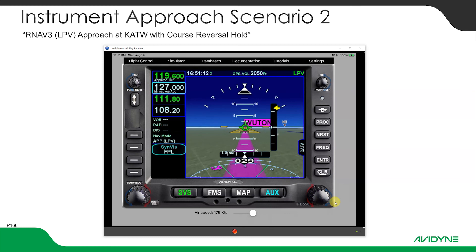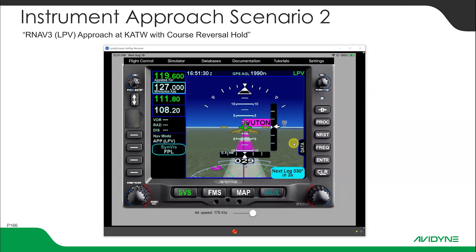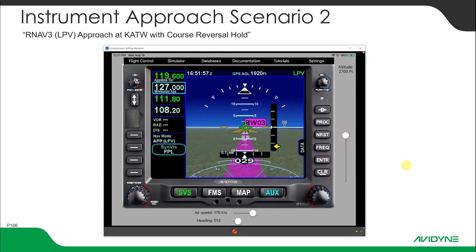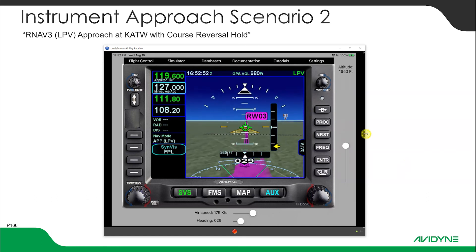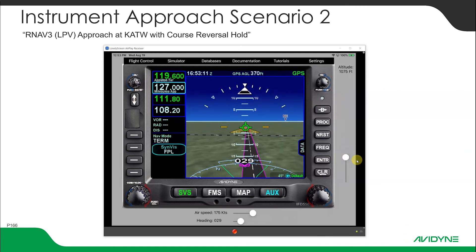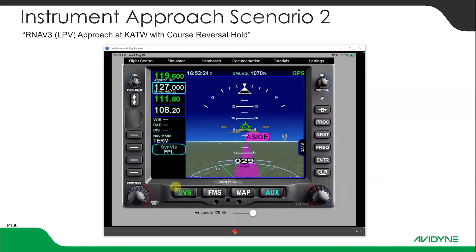Just like we flew the first scenario, we're going to fly the approach. The simulator isn't going to descend, but you can see we've captured the glide slope — it's come alive. When I get a centered D-bar, I would want that coupled so it would fly that. In the simulator, we're going to go ahead and fly the missed. It looks just like scenario one. Then we switch back to GPS, off to KCGX, and I'm going to end this here.